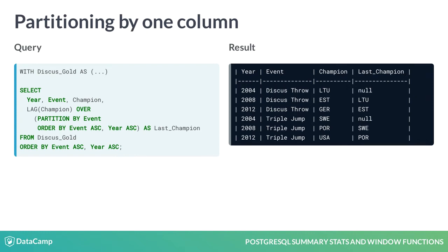The one difference in the results is that the first row of the Triple Jump champions correctly has NULL as last champion. That's because it's the first row in its partition.